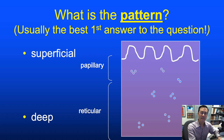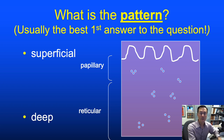Think of it as a 10-part multiple choice question: if you get that first one right and then know one or a few disorders that fall under that pattern, you're probably well on your way.